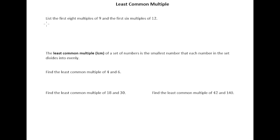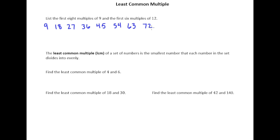When I say list multiples, what I mean is just first take 1 times 9, which is 9. Then 2 times 9 is 18, 3 times 9 is 27, 4 times 9 is 36, 5 times 9 is 45, 6 times 9 is 54, 7 times 9 is 63, and 8 times 9 is 72. So there are the first eight multiples of 9.